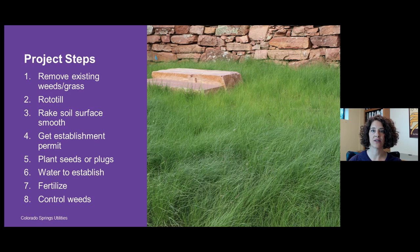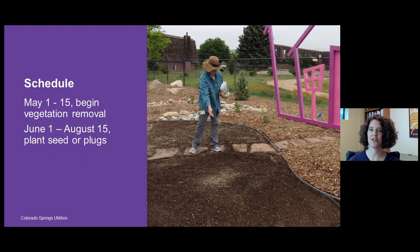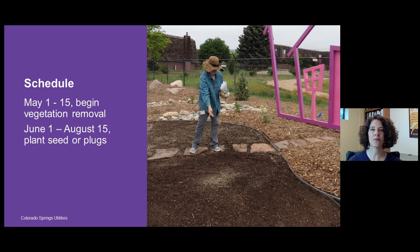The eight steps are: first, removing existing grass and weeds; second, rototilling or core aerating; third, raking the soil surface smooth; fourth, getting an establishment watering permit; fifth, planting; sixth, following the watering schedule; seventh, fertilizing; and eighth, controlling weeds. Plan your project schedule carefully — starting vegetation removal around May, since the best planting window for these warm season grasses is June 1st through August 15th, when soil and air temperatures are warm enough for germination.